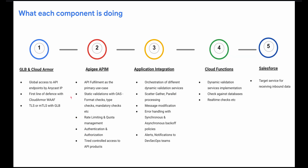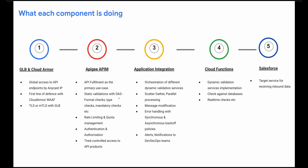What each component is doing: Google Load Balancer and Cloud Armor provide a global endpoint with anycast IP, and Cloud Armor provides the first line of defense for volumetric and DDoS attacks on our API. We can implement TLS and mTLS with Google Load Balancer. Apigee is our API fulfillment engine — within it we have static validation for OpenAPI spec, rate limiting, quota management, authentication, authorization, and tiered controlled access to our API product.